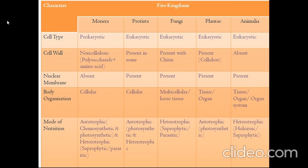Next, cell wall. The cell wall of Monera is non-cellulosic, made up of polysaccharide and amino acid. In Protista, cell wall is present in some. In Fungi, the cell wall is made up of chitin, and plants have cellulose, that's why they are so hard or woody. Animals don't have any cell wall outside their cell membrane.